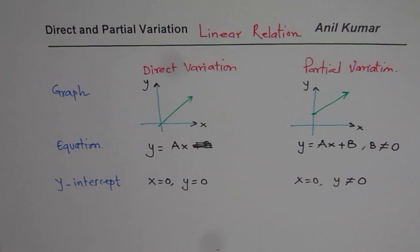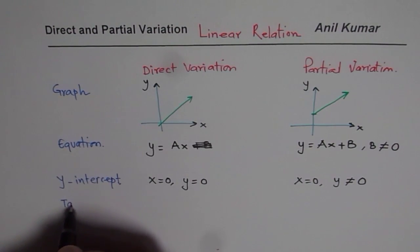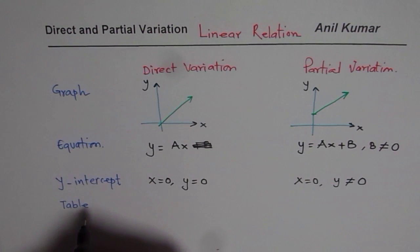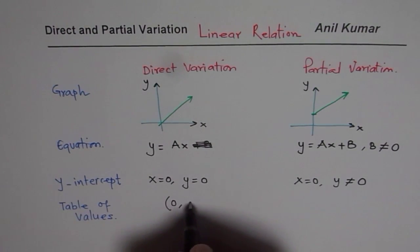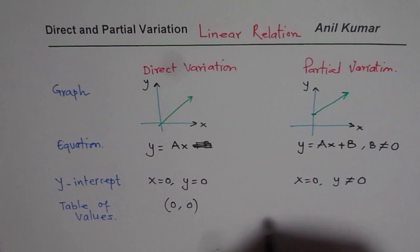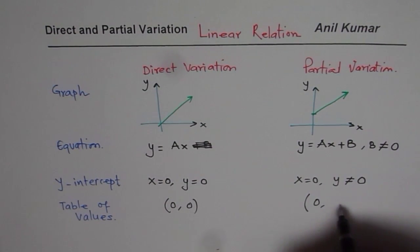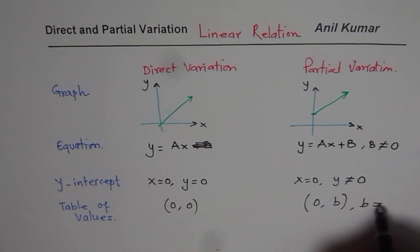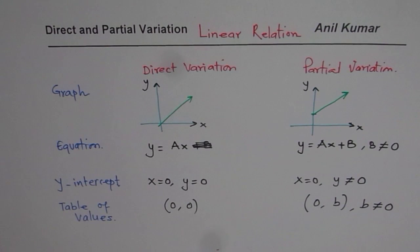Or you could also check the value from table of values. So from table of values, you could check for the coordinate points. If you have (0,0) in the table of values, then it is direct variation. But if you have (0,b) and some other number, where b is not equal to zero, in that case it becomes a partial variation.